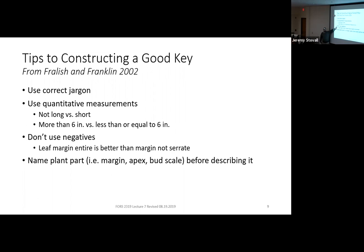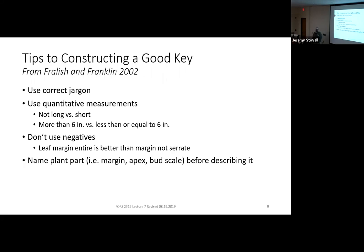You can't completely follow this next rule, but do your best: try to avoid negatives. Instead of saying what something isn't, say what it is. For example, 'leaves are lobed' and then 'leaves are unlobed' — you're saying what it is, not 'leaves not lobed.' Sometimes you're stuck and have to use a negative, like 'leaves bristle-tipped' versus 'leaves not bristle-tipped,' or 'thorns or prickles present' versus 'thorns or prickles absent.' But for morphology descriptions like leaf shape, instead of 'not deltoid,' list the other possible leaf shapes.